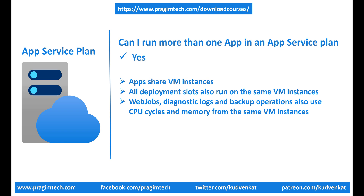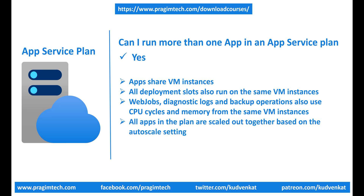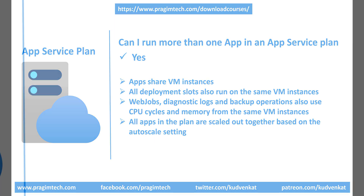So if you have three VMs in your App Service Plan and you have deployed multiple apps, all the apps run on all three VM instances. If the plan is configured to auto-scale, then all apps in the plan are scaled out together based on the auto-scale settings.